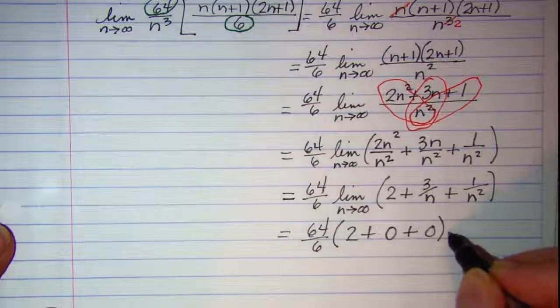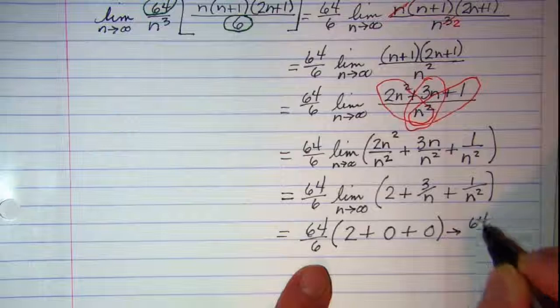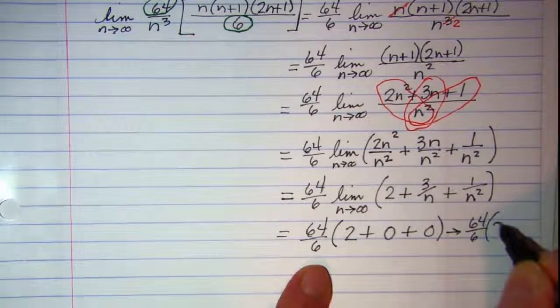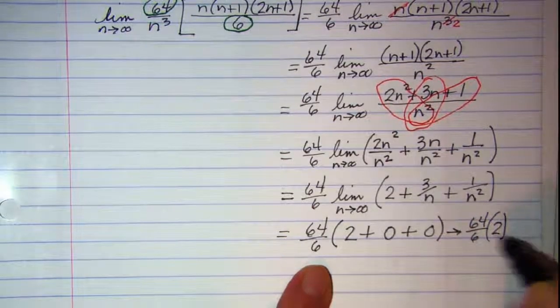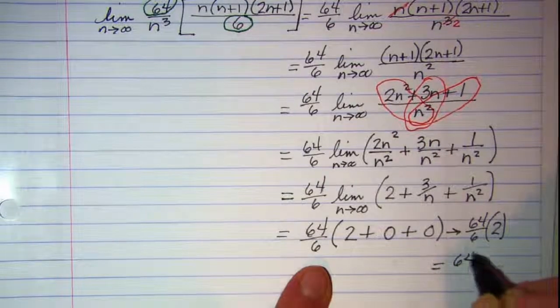So we have 64 over 6 times 2 which is 64 over 3.